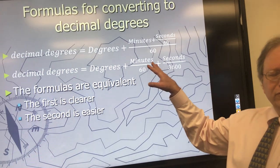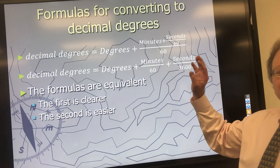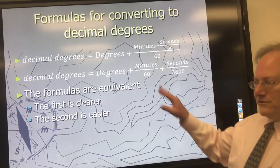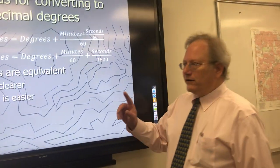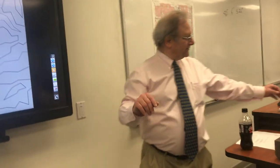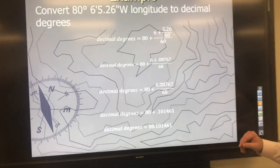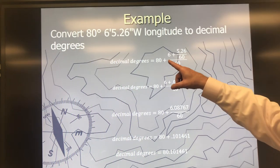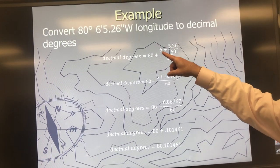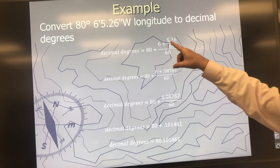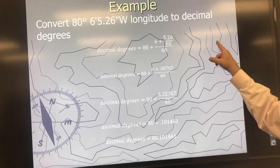I don't care which one you use, like on the quiz for example, but whichever it is, try to get the right answer. So if we go to the next slide, we can see the calculation. We've got 80 degrees, 6 minutes, and 5.26 seconds of west longitude.